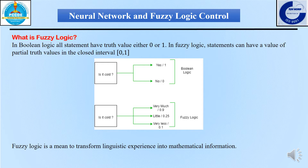But in fuzzy logic, we can assign a partial truth value to all these statements in the closed interval 0 to 1. For example, that same question can be answered with linguistic variables such as 'very much,' where we assign the truth value as 0.9, which is very close to 1. If it is 'little,' we assign the truth value as 0.25; if it is 'very less,' we assign 0.1; and if it is 'moderate,' we assign 0.5. So basically, fuzzy logic means to transform the linguistic experience into mathematical formulation.